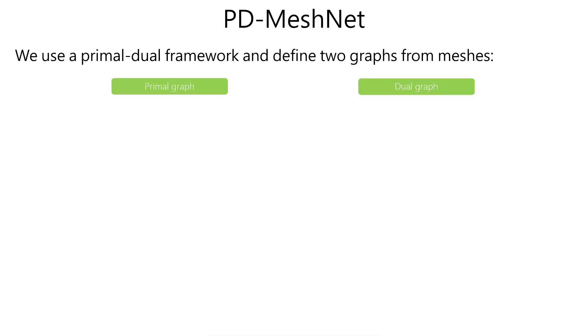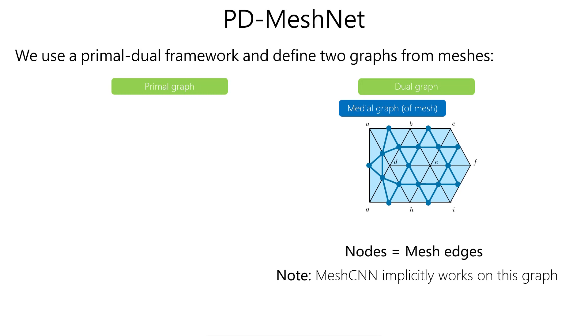We tackle these limitations by using a primal-dual framework, which relies on two graphs specifically defined for meshes. A dual graph, with nodes corresponding to the mesh edges, similarly to MeshCNN.